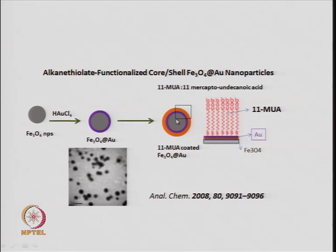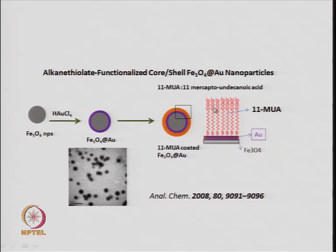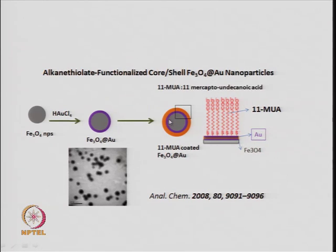In the TEM image, the dark spot at the center is iron oxide covered with gold particles. On top, the 11-mercaptoundecanoic acid provides an 11-carbon chain with a carboxylate group at the end, so negative ions are on the surface. The three layers are: iron oxide, gold (purple), and the mercaptoundecanoic acid chain.